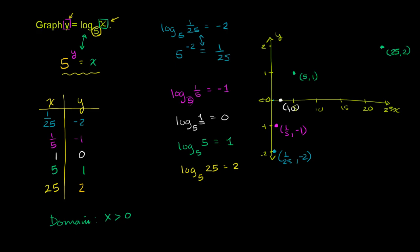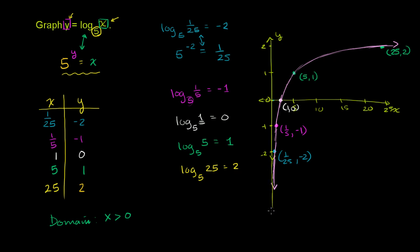Now I can graph the function. As x gets super, super small, y goes to negative infinity — you'd have to raise 5 to a very, very negative power to get a tiny number like 0.0001. So y gets very negative as x approaches 0. The curve moves up and then curves to the right. It's going to keep going down at a steeper and steeper rate near the y-axis, getting closer and closer to it but never quite touching it.